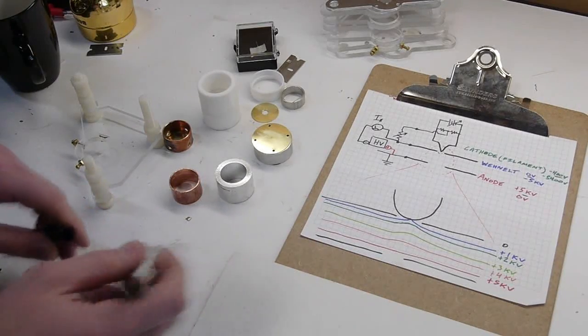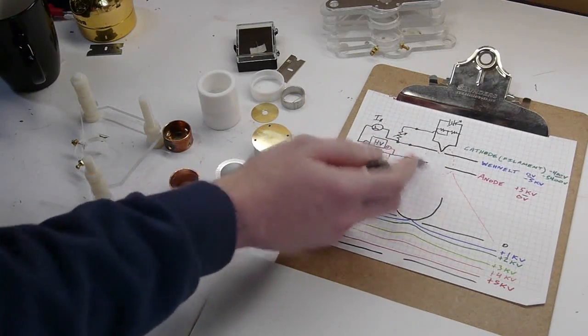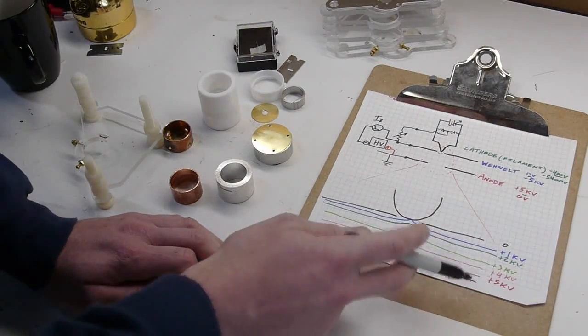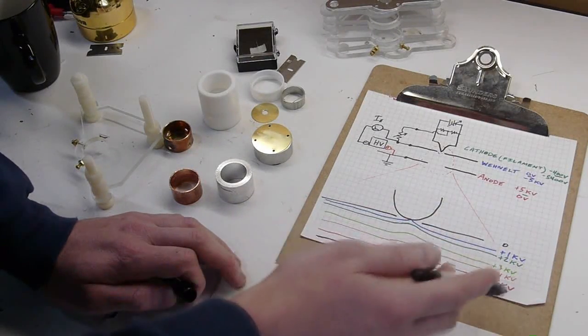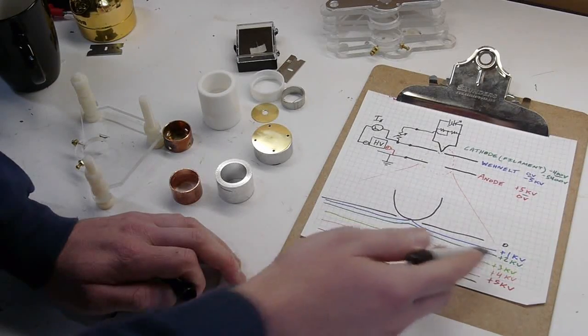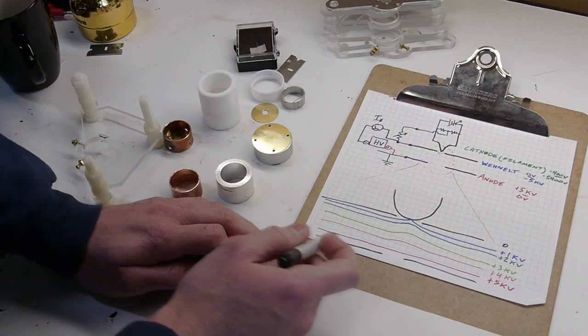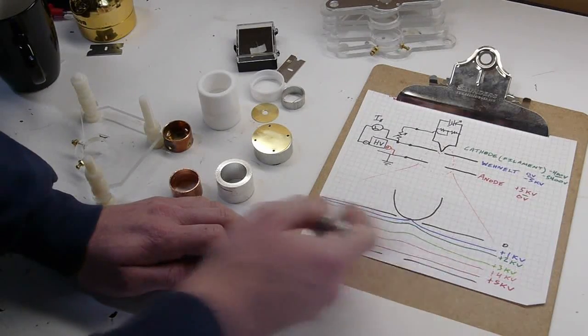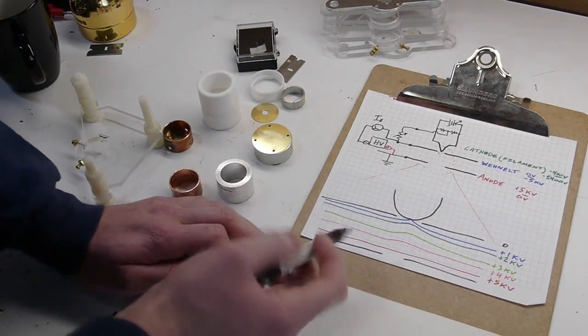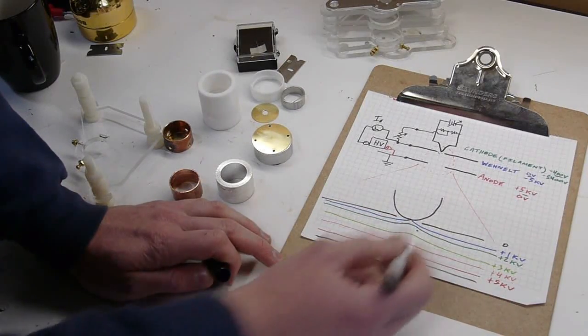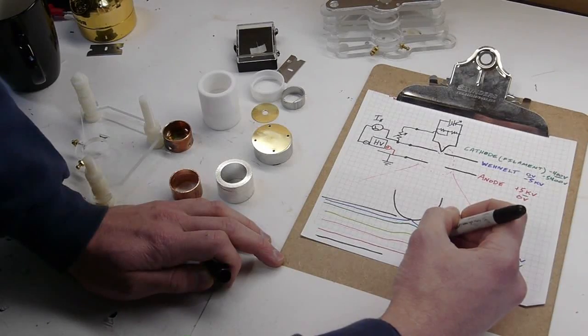And the field looks kind of like this. So this is a close-up of the action here. And again, I'm sorry about the voltage conventions. I said 5 kV at the bottom and zero at the top, but I hope that's okay. The field is very flat.